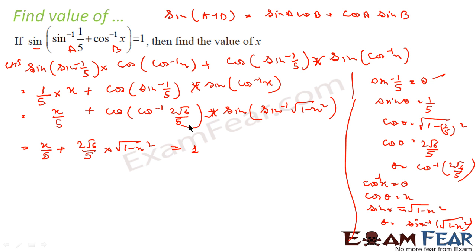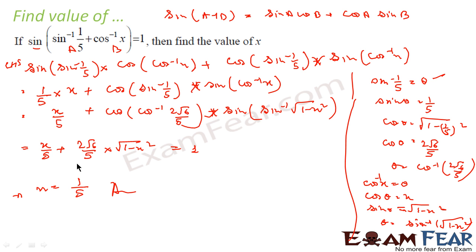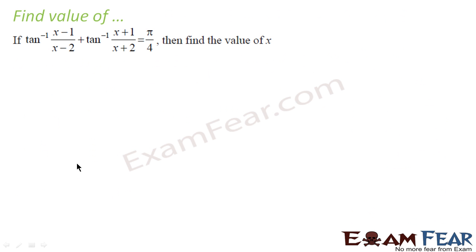The whole thing is equal to 1. So I have the equation: x/5 + (2√6/5)·√(1 − x²) = 1. If you solve this equation, you will get x = 1. I won't solve this for you — you can solve it yourself. So what I did: I rewrote sin(a+b), converted sin⁻¹(1/5) to cos⁻¹ form and cos⁻¹(x) to sin⁻¹ form, then solved for x.